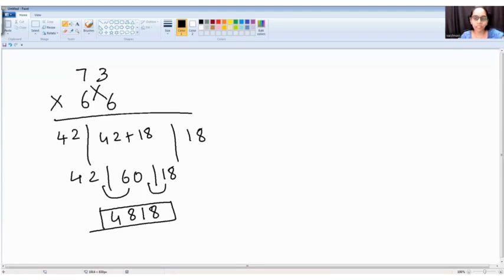Last one more example to go. Now, 78 into 86. 7 into 8 is 56. 8 into 6 is 48.